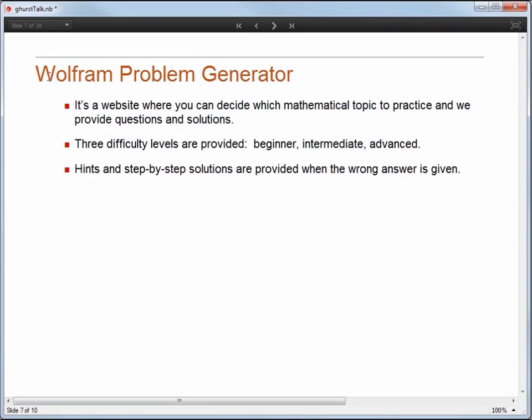Now let's move on to the Wolfram Problem Generator. Now the Wolfram Problem Generator is pretty much the inverse of WolframAlpha. With WolframAlpha, you ask it a question and it gives you an answer. Well with the Wolfram Problem Generator, it asks you a question and you give it an answer. So it's a website where you can decide the mathematical topic to practice and we'll provide you with questions. We offer three difficulty levels, beginner, intermediate, and advanced. And hints and step-by-step solutions are provided along the way if someone gets stuck.